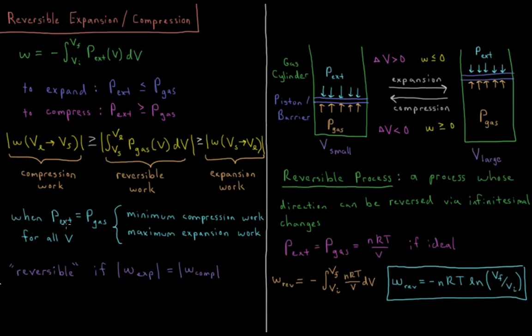So whenever the external pressure equals the gas pressure for all volumes, you get the minimum compression work, and you get the maximum expansion work. So this is reversible when the magnitude of our expansion work equals the magnitude of our compression work.